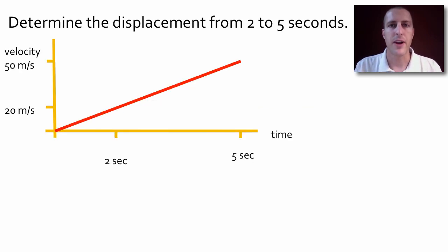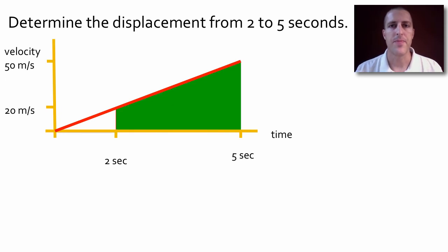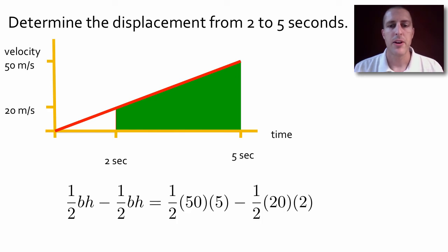Now let's determine the displacement on this graph between 2 seconds and 5 seconds. So we need the area between our graph and the t axis. So we want this region, and this region is a parallelogram. You could use your equations for parallelograms to find the area, or you could also take a big triangle between 0 and 5 seconds minus the small triangle between 0 and 2 seconds. That's what I'm going to do. So we have 1/2 base times height for the big triangle minus 1/2 base times height for the small triangle. We plug in our numbers for each triangle. And by doing the subtraction, we figure out that the displacement from 2 seconds to 5 seconds is 105 meters.